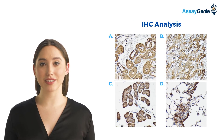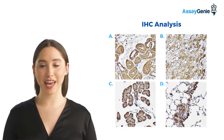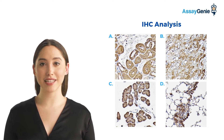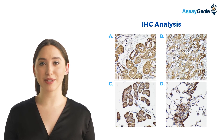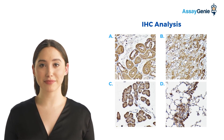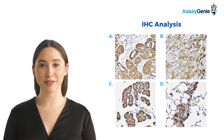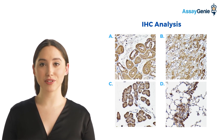In addition, this antibody has been applied to IHC studies. Image A is rat kidney at a dilution of 1 in 100. Image B is human liver cancer at a dilution of 1 in 100. Image C is rat pancreas at a dilution of 1 in 100. And Image D is mouse lung at a dilution of 1 in 100.